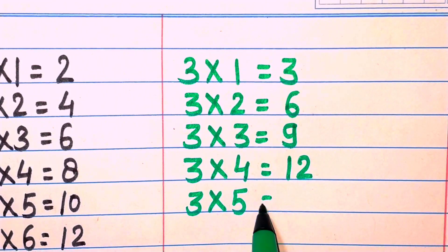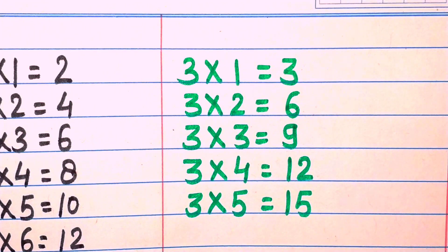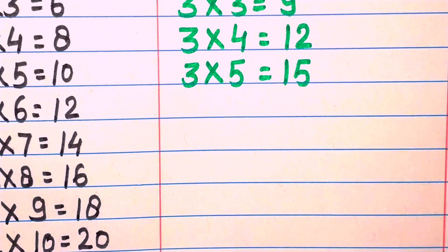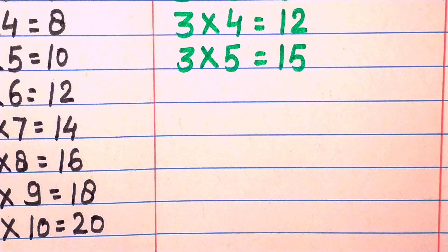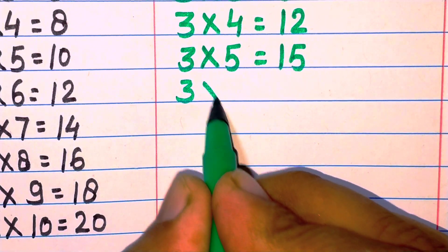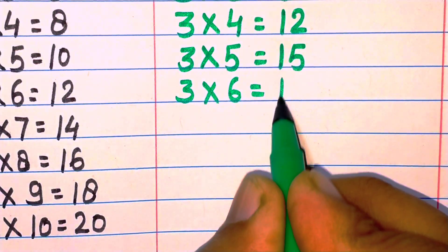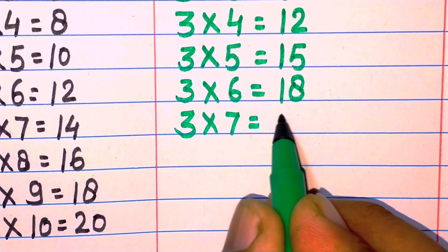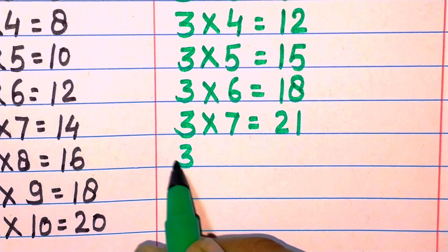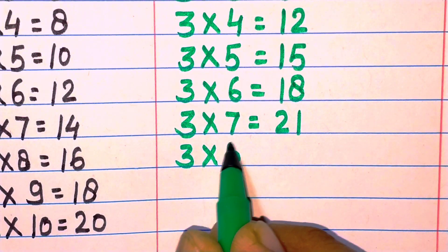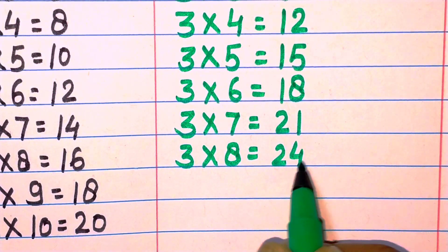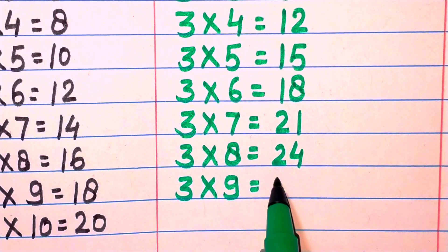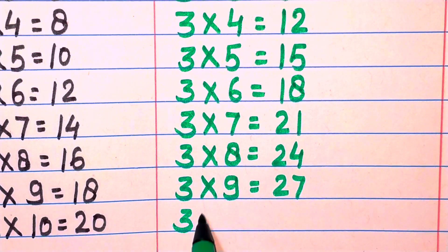Three five are fifteen, three six are eighteen, three seven are twenty-one, three eight are twenty-four, three nine are twenty-seven, three ten are thirty.